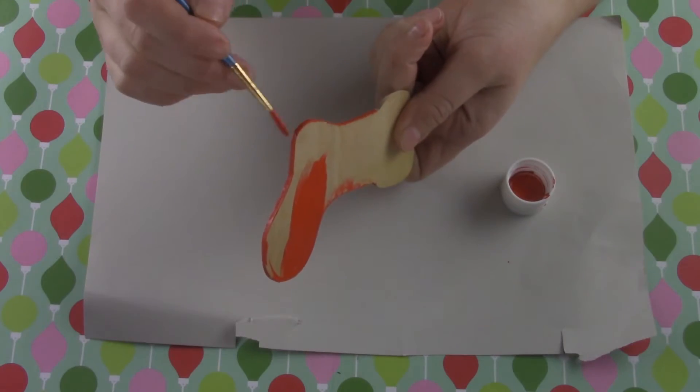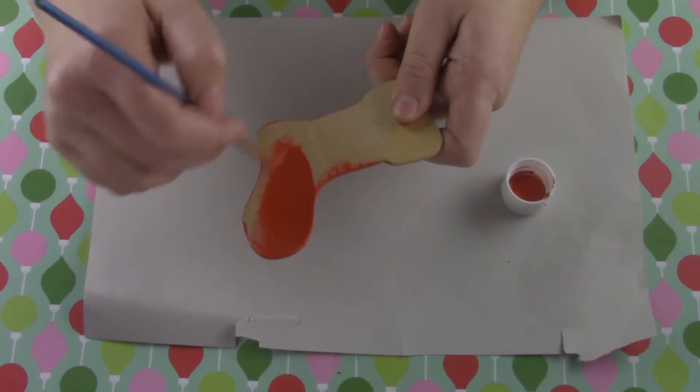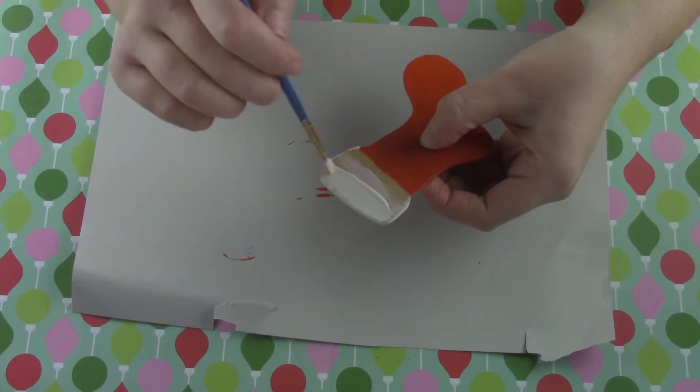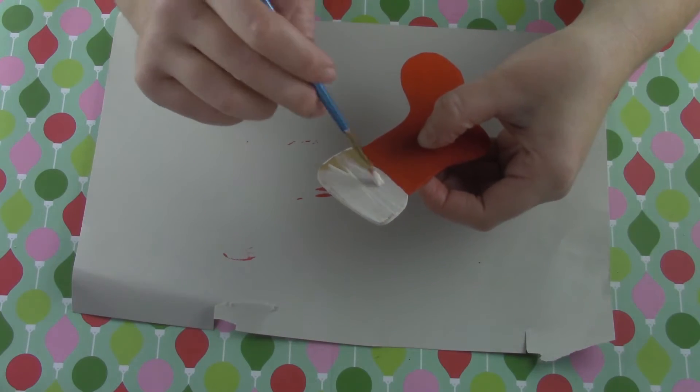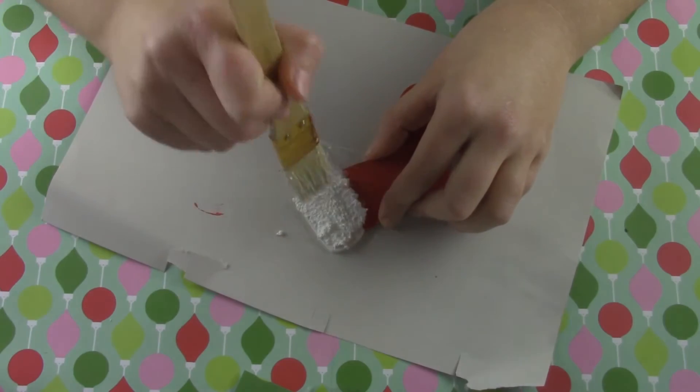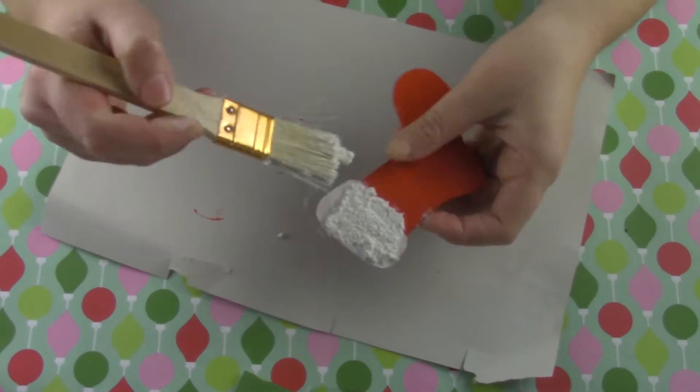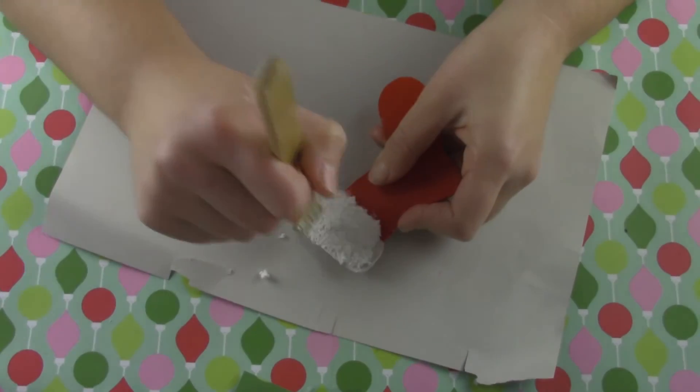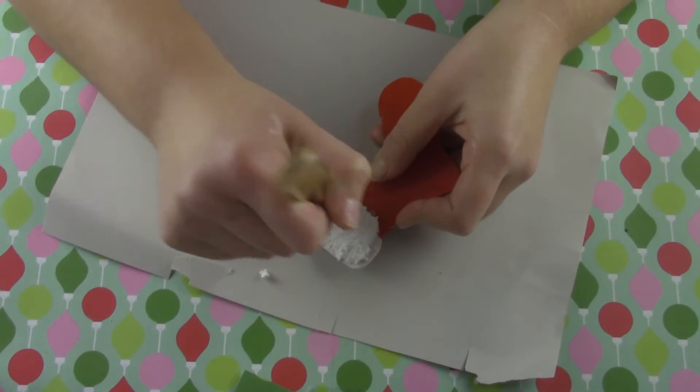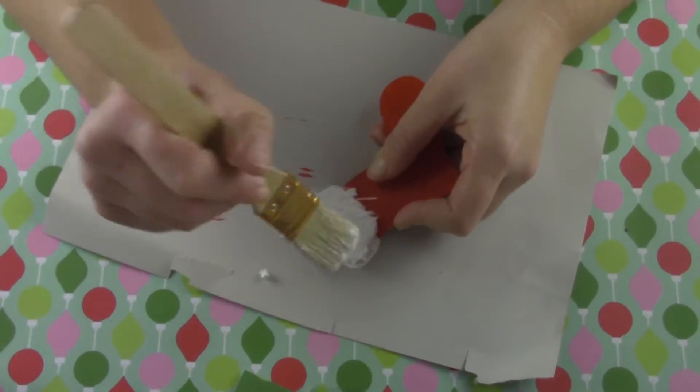Go ahead and paint the bottom part of your stocking in red. Let that dry and then paint the top part of your stocking in your white paint. And when that's all dry, go ahead and add your snow tex. You kind of have to stipple it on like this and it's kind of flaky so it's kind of hard to work with. But have fun!